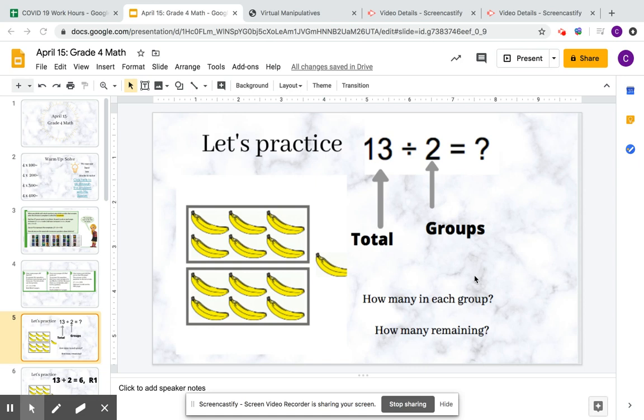Let's practice remainders. This question says 13 divided by 2 equals what. Our total is 13 bananas, and we have two groups. I divided those already, and you can see there's two groups.